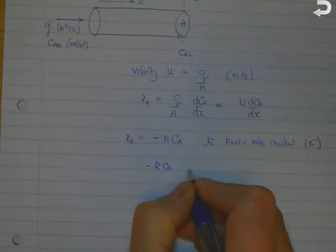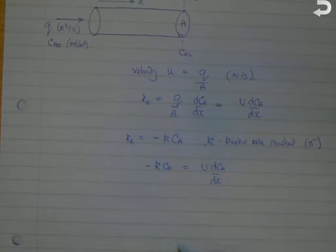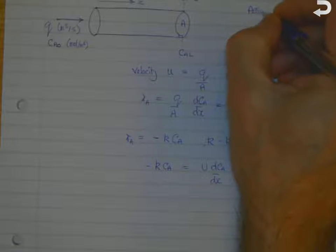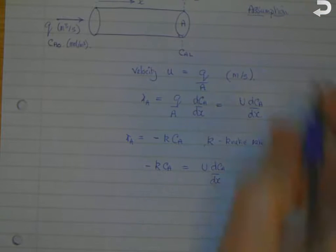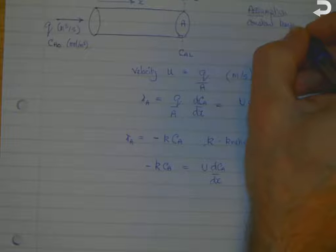I'm going to make one further assumption in order to allow us to do the integration. Now that way we need K to be constant, so we're going to assume that we've got constant temperature along the length of the reactor.